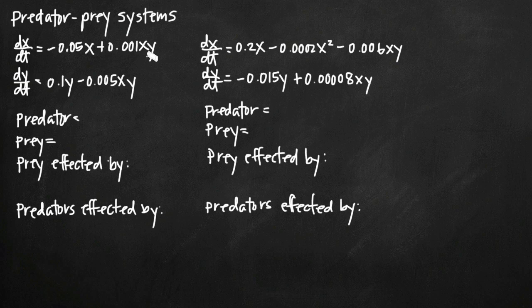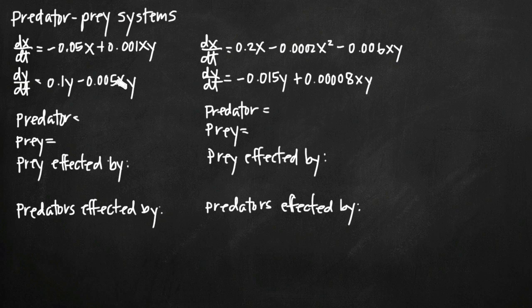In a predator-prey system, what we're interested in are what I like to call the interaction terms, and the interaction terms are where we see x and y multiplied together. In the first equation for dx/dt, the first term only includes the variable x, whereas the second term is the product of x and y with some constant coefficient. Similarly in dy/dt, we have a term only involving y and then the interaction term where x and y are multiplied together.